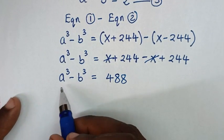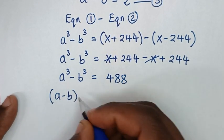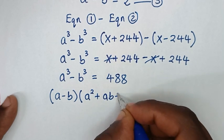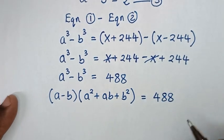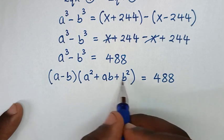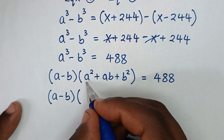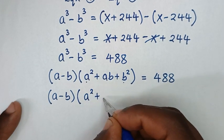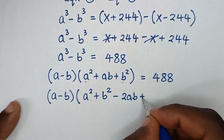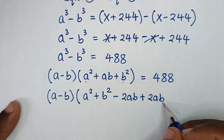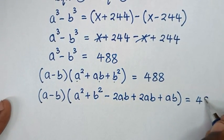Then in the next step, a³ minus b³ is the same as (a minus b)(a² + ab + b²), which equals 488. We'll rearrange: a² + ab + b² can be written as (a² + b² − 2ab) + 2ab + ab, which gives (a − b)² plus 3ab, all multiplied by (a − b), equals 488.